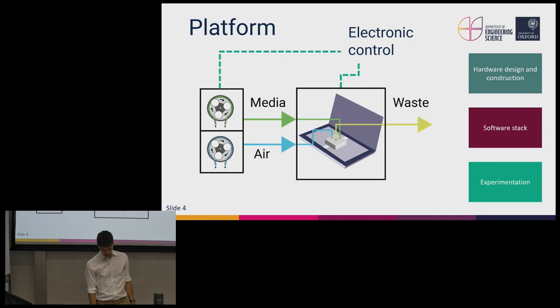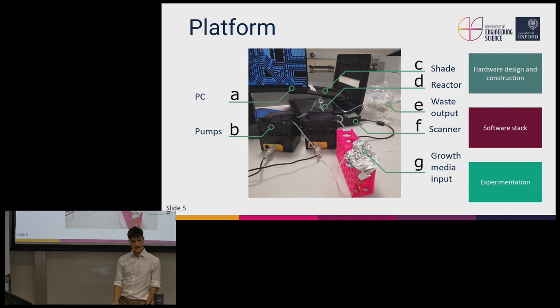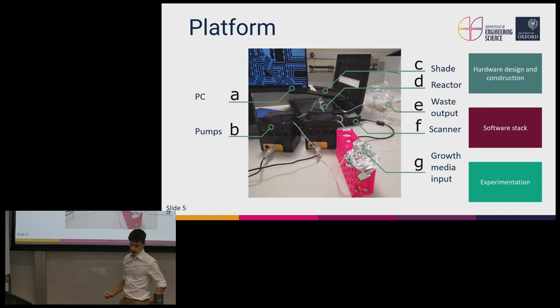The platform consists of an acrylic chip which sits on a flatbed scanner. This takes population size estimates using an electronic system. This population size estimate is then used to control pumps which pump growth media into the chip and also air for the continued growth of the culture. Here is the system in the lab: the plastic chip sits on the flatbed scanner, with pumps on the left and right, and growth media in a sterile vessel. This is all controlled by a computer which coordinates the pumps and scanner system.